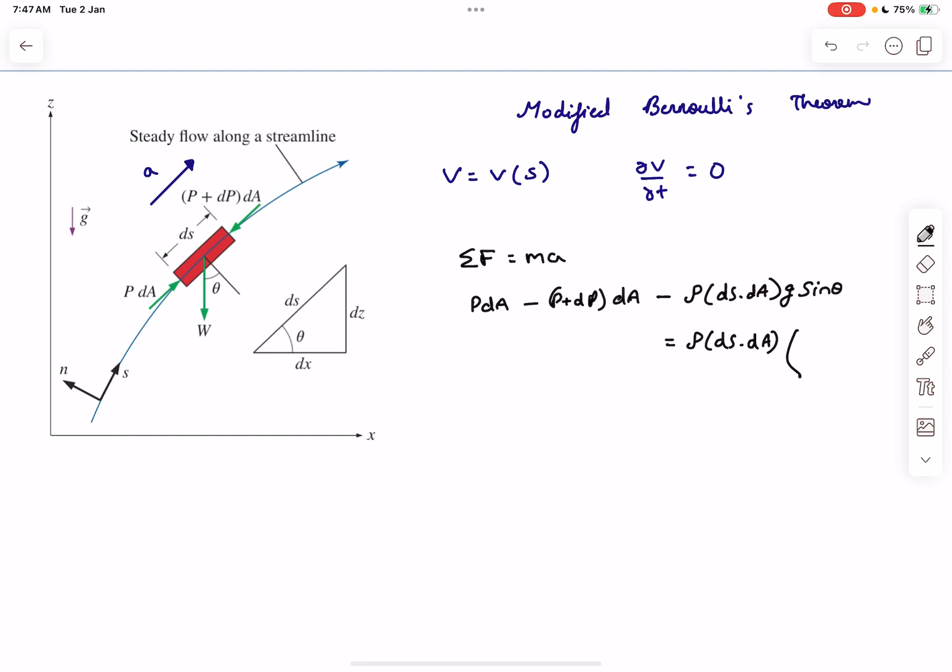The acceleration is going to be a function of position, which means the acceleration will be v·dv/ds. We can cancel out the dA terms. Rearranging the terms, what you obtain is dp/ρ + g·ds·sin θ + v·dv = 0.